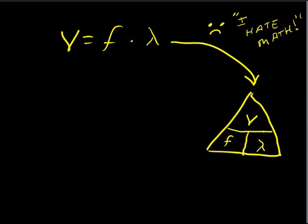Like I said, this vertical line is multiplication, this horizontal line just like in a fraction is division. So here's what we can do: if we're looking for velocity, it's just velocity equals frequency times wavelength.